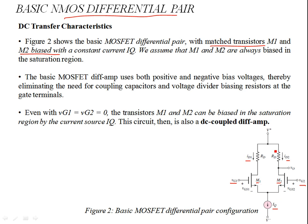There is symmetry in the circuit. RD is the same resistance connected to the drain terminals of both M1 and M2. For identical transistors and a symmetrical circuit, applying KCL shows that IQ splits equally into ID1 and ID2, divided equally between the two symmetrical common source configurations of M1 and M2.